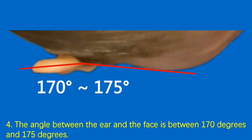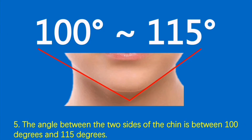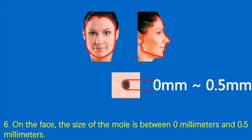Condition 4: The angle between the ear and the face is between 170 degrees and 175 degrees. Condition 5: The angle between the two sides of the chin is between 100 degrees and 115 degrees. Condition 6: On the face, the size of the mole is between 0 millimeters and 0.5 millimeters.